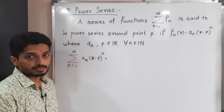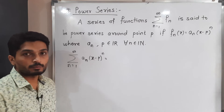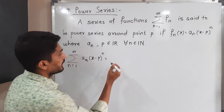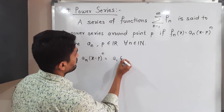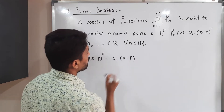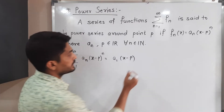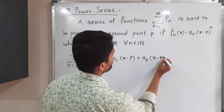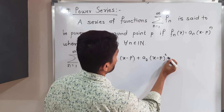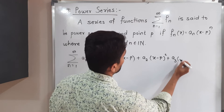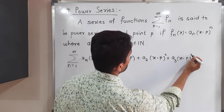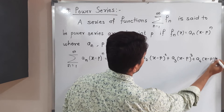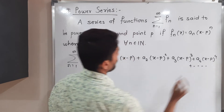If you expand this series — that means if I put n equal to one, two, three — you will have terms like this: a₁(x minus p) for n equal to one; a₂(x minus p) squared for n equal to two; a₃(x minus p) cubed for n equal to three; a₄(x minus p) raised to four; and so on.